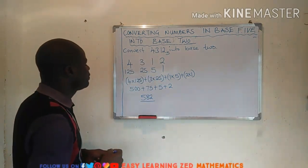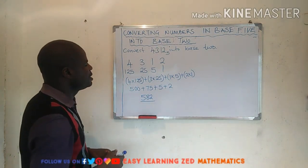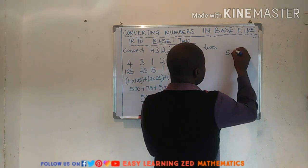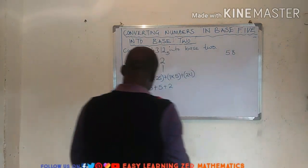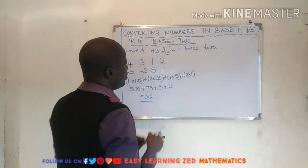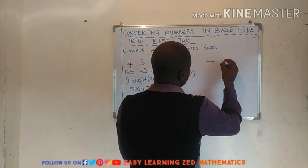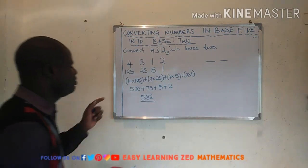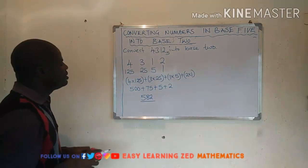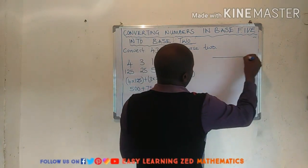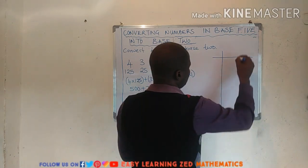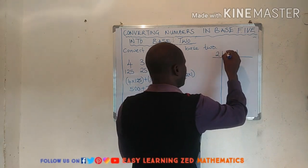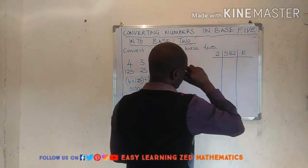So 4312 base 5 equals 582 in base 10. Now let's convert this number into base 2. We have 582, and I'm going to use the remainder method to do this conversion.